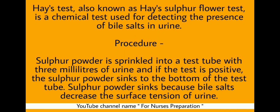Procedure: Sulphur powder is sprinkled into a test tube with 3 milliliters of urine. If the test is positive, the sulphur powder sinks to the bottom of the test tube. Sulphur powder sinks because the bile salts decrease the surface tension of urine.